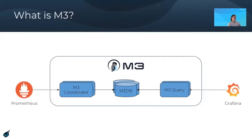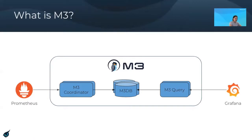Going into the architecture overview of M3, we have three tiers: the ingest/downsampling tier called the M3 coordinator, a distributed time series database called M3DB, and the query tier called M3 query used to fetch all data. On the write side, the Prometheus instance points to M3 via the Prometheus remote write endpoint, which the coordinator implements. On the read side, a Grafana instance is pointed directly to the M3 query tier, which has a built-in PromQL read endpoint and can execute read requests by fetching data from the M3DB tier.